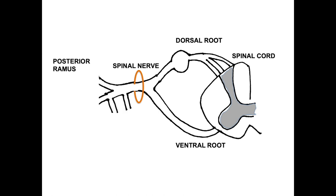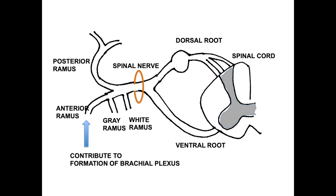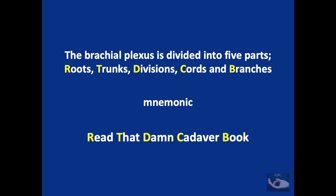The spinal nerve gives rise to the posterior ramus and the anterior ramus — two main branches — and then two small branches, the grey ramus and the white ramus. The anterior rami of the root contribute to the brachial plexus formation. It consists of five parts: the roots, trunks, divisions, cords and the branches.